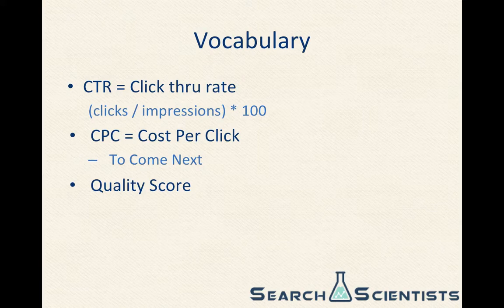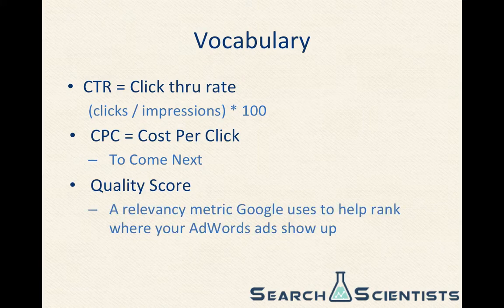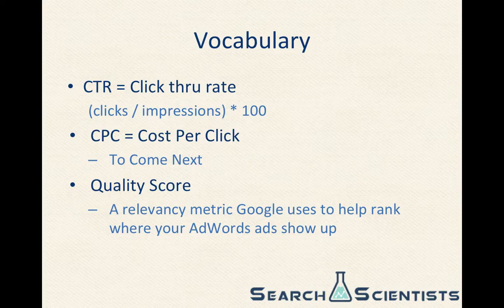And finally, quality score. Quality score is extremely important, and it's a relevancy metric Google uses to help rank where your ads show up. So if you want a high quality score, you want to make sure that your ads are very relevant towards what people are looking for, that your keywords are very relevant and tightly knit, that the search queries people are searching are very related to the keywords you're bidding on if you're using phrase or broad match, and of course that your landing page is relevant to what people are looking for, and it also has all that privacy policy and terms of service.